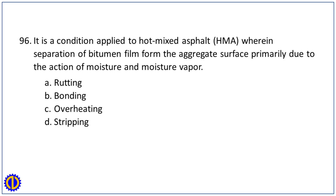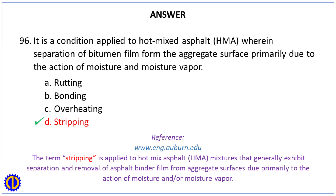Question 96. It is a condition applied to hot mix asphalt wherein separation of bitumen film from the aggregate surface occurs primarily due to the action of moisture and moisture vapor. A. Rutting. B. Bonding. C. Overheating. D. Stripping. Answer: D. Stripping. Reference: eng.auburn.edu — the term stripping is applied to hot mix asphalt mixtures that exhibit separation and removal of asphalt binder film from aggregate surfaces due primarily to the action of moisture and/or moisture vapor.